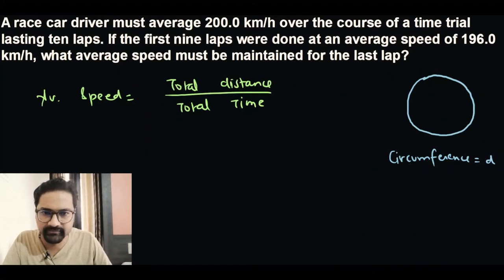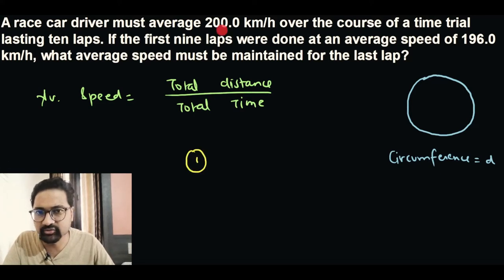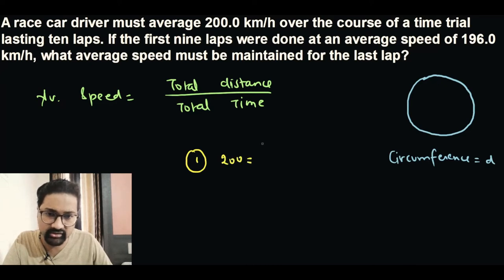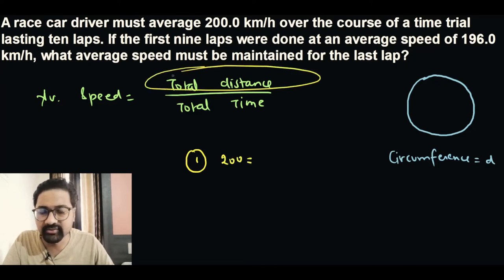The first case is when we have the average speed of 200 kilometers per hour for 10 laps. So we know that the average speed is 200 kilometers per hour.